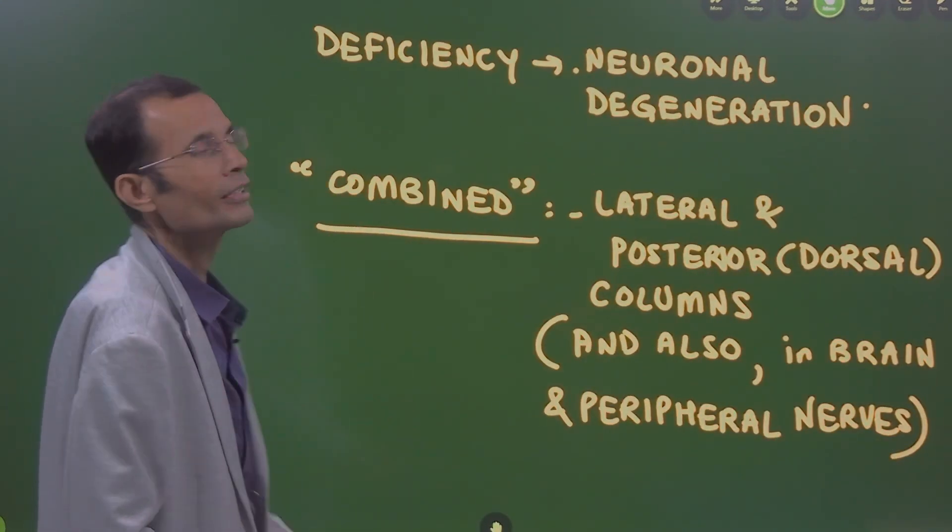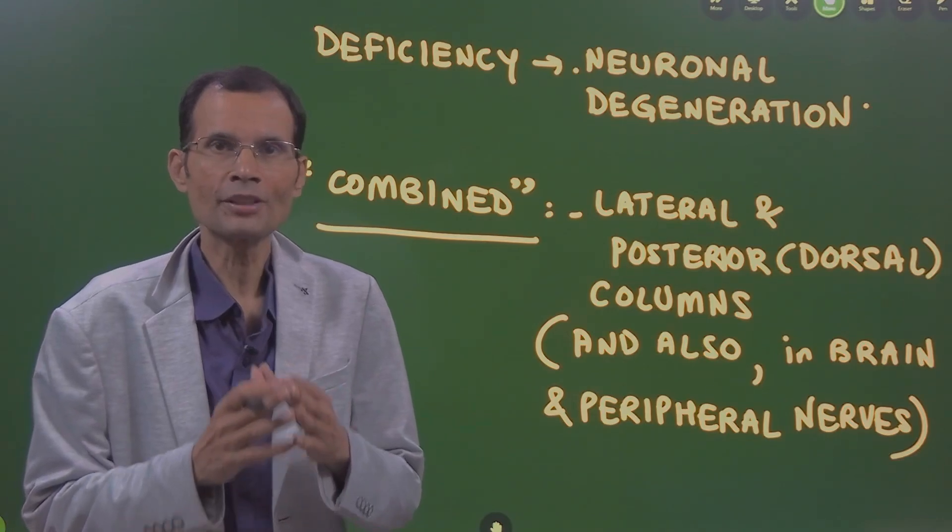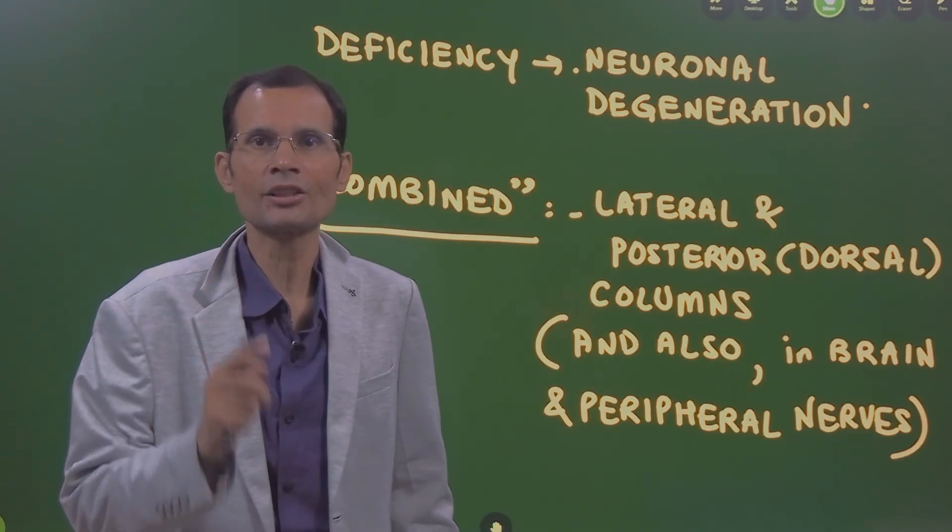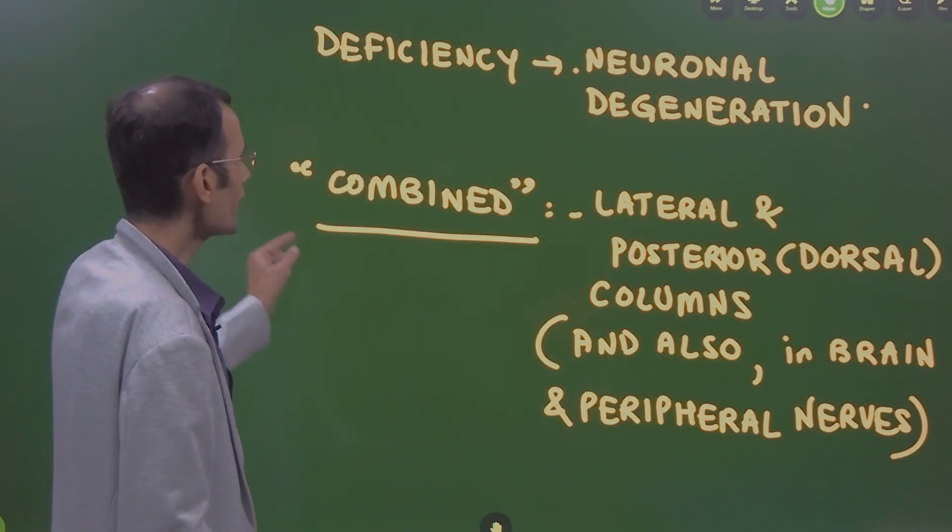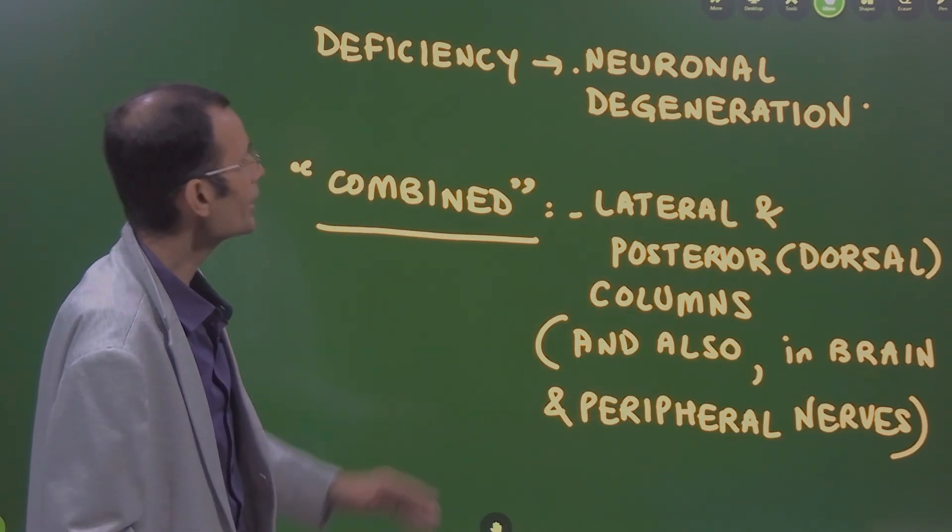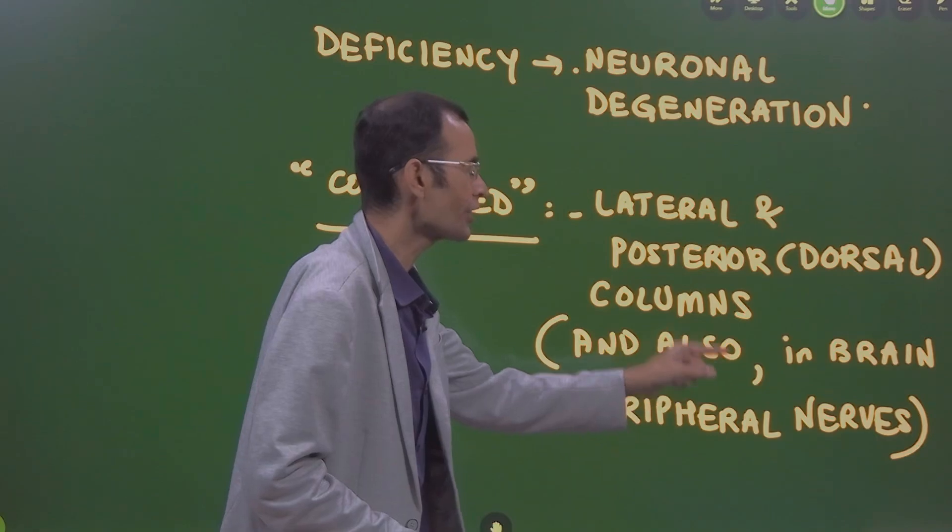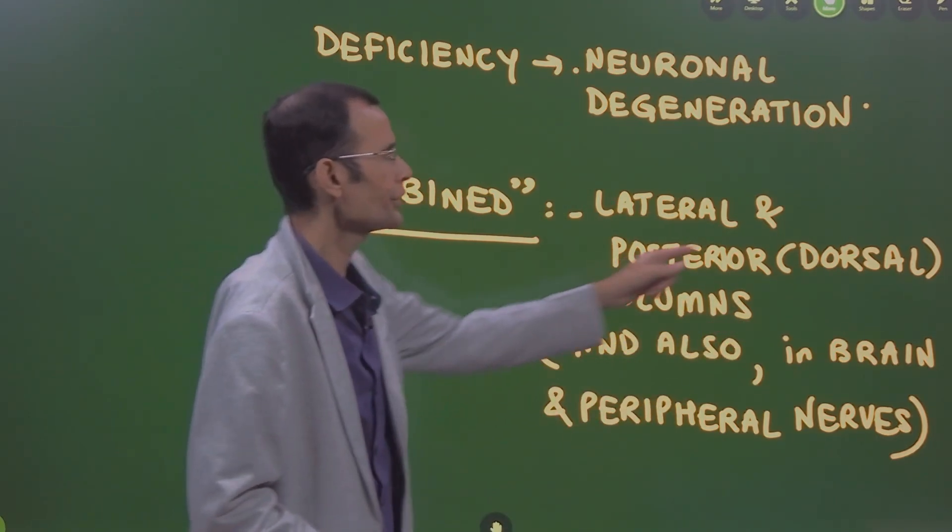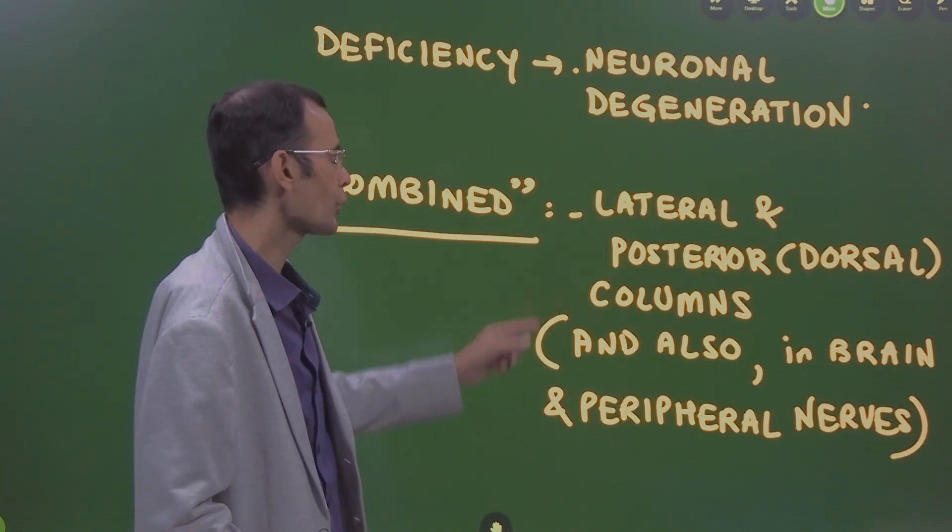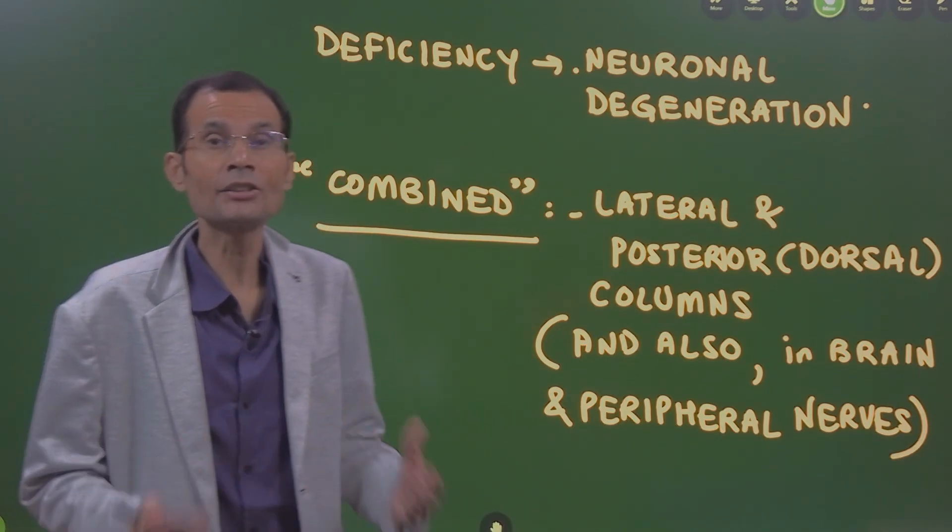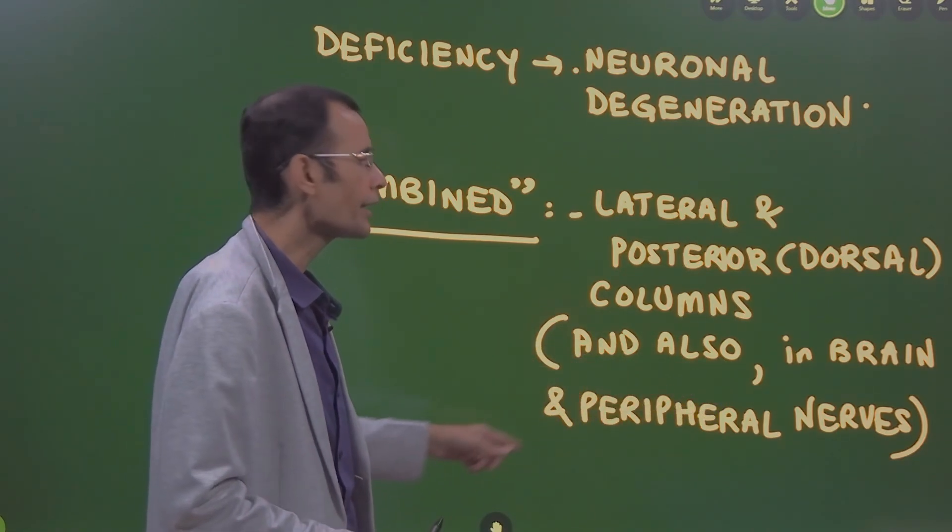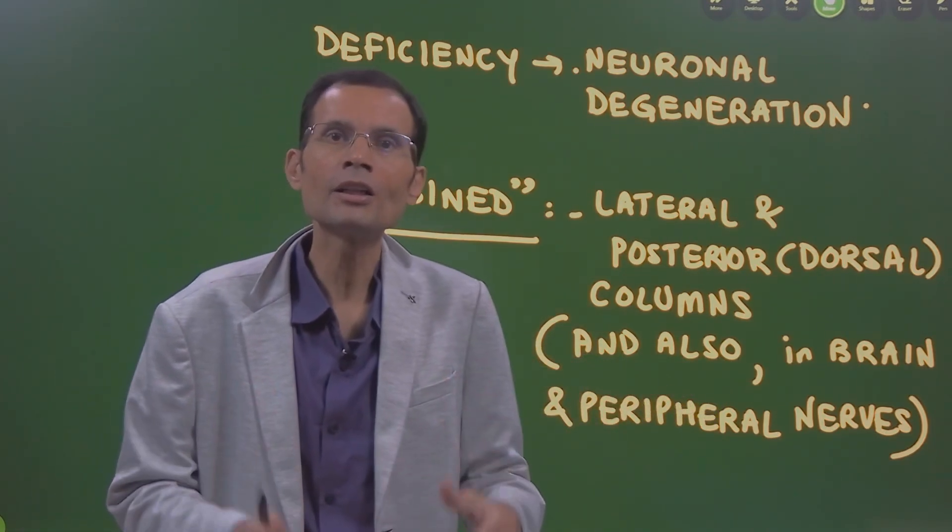Now, coming to the next part, B12 deficiency results in subacute combined degeneration of the spinal cord. So what is that combined meaning degeneration of the lateral and posterior white columns, posterior or dorsal white columns. So and in addition to that also neuronal degeneration in the brain and of also of the peripheral nerves possibly.